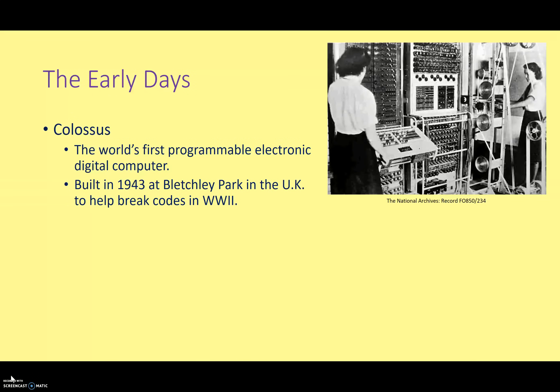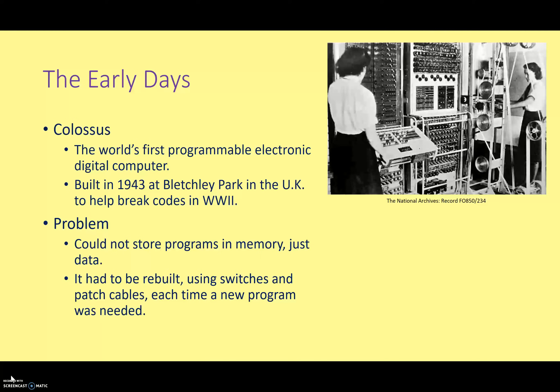Even though the Colossus was a great breakthrough in computer technology, it did have a problem. Although data could be stored in the memory of the Colossus, it couldn't store programs in memory. That meant if you wanted to change the program, you had to get into the guts of the machine and rebuild the cables and switches needed to make your new program. This was very time consuming. For the American ENIAC system, I believe it took about three weeks to rebuild all the patches, cables, and switches required to change the program — clearly not very convenient.